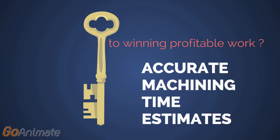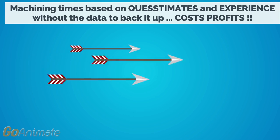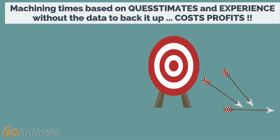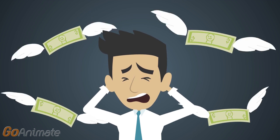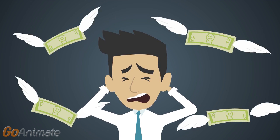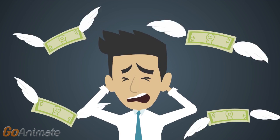What's the key to not only winning work, but winning profitable work? Well, a good quotation that makes profits all starts with an accurate machining time estimate. Pulling machining times out of thin air with statements like, 'that should take us about two minutes to machine,' is plain and simple costing you money. How can you possibly deliver an accurate quotation to manufacture a part to your customer when you don't accurately know how long it will take to machine the part?